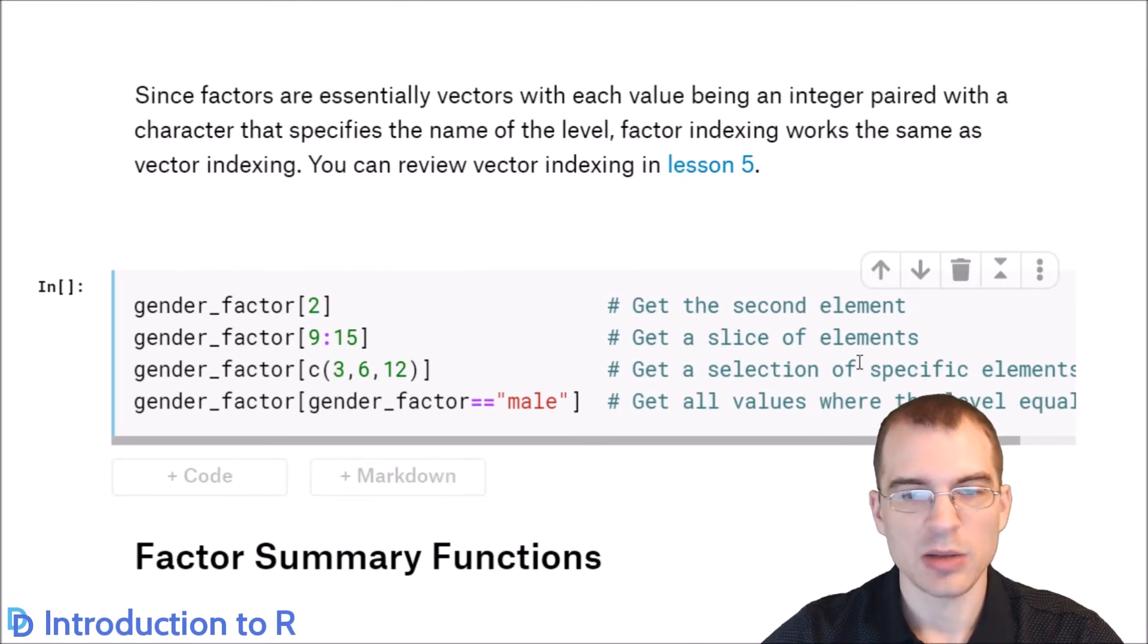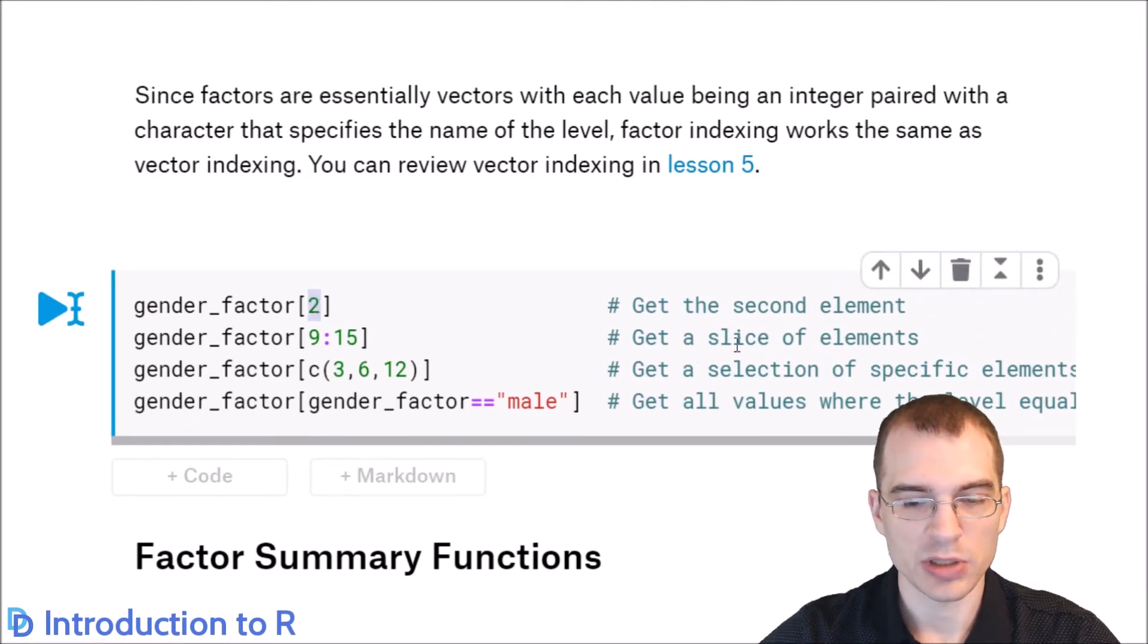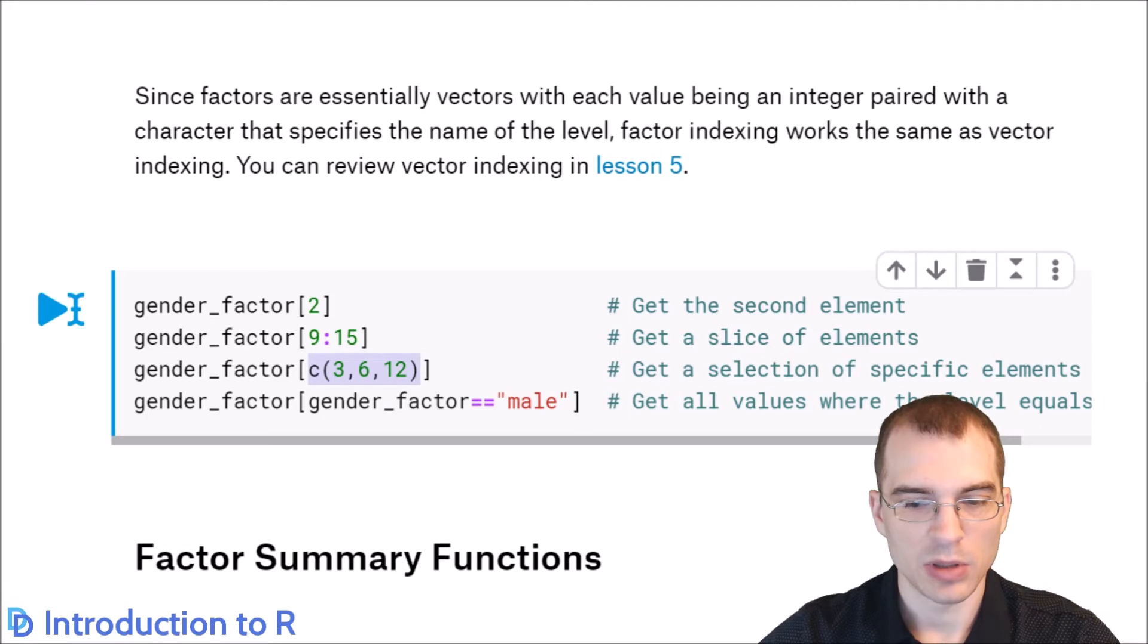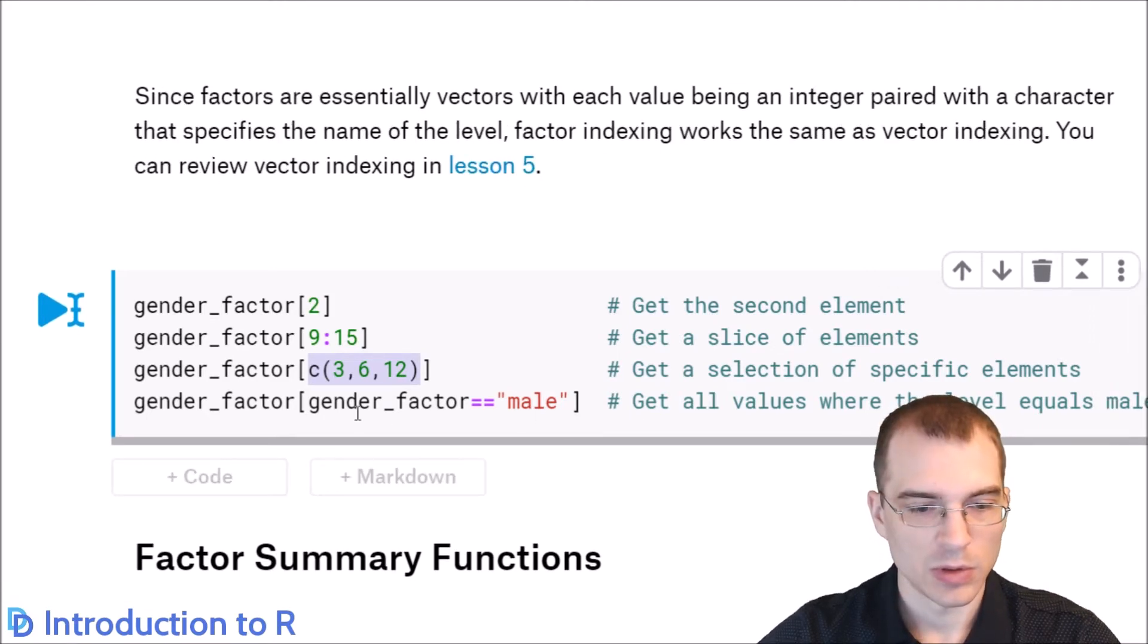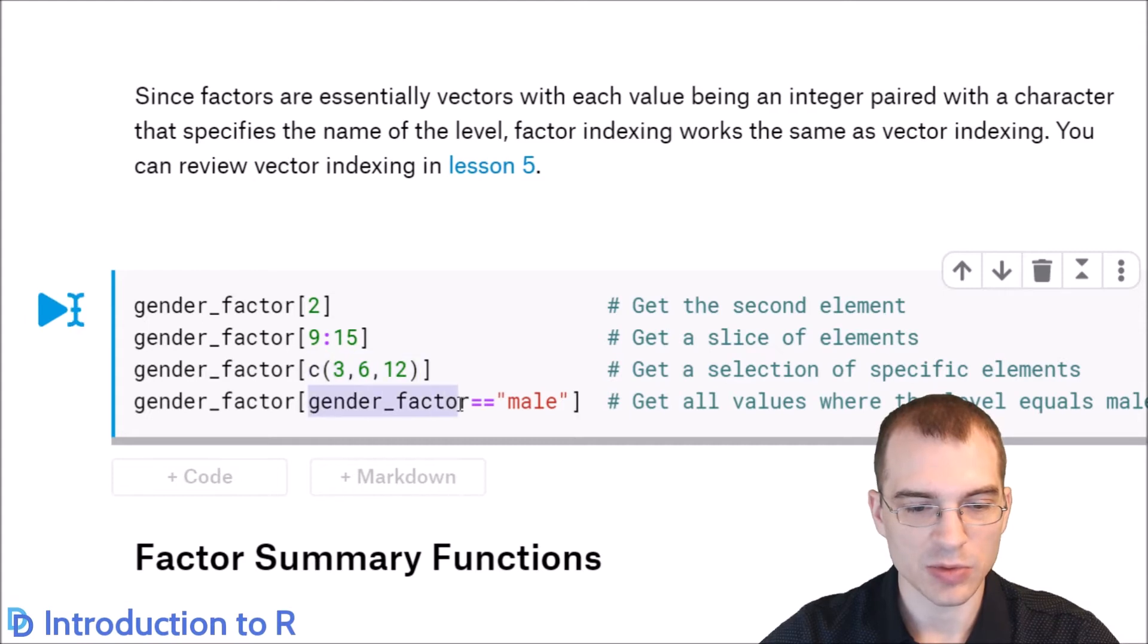Now factors support many of the same indexing operations that we've learned before. They're essentially vectors, with each value being an integer paired with some character that specifies the name of the factor level. So you can use the indices to get out elements just like you would with a normal vector. For instance, just putting two in there will get the second element of the factor. The colon construction will take a slice. Passing in a vector will get a selection of specific elements. And a logical operation will just get all values that meet that criteria. So in this case, we're getting all the entries where the value equals male.